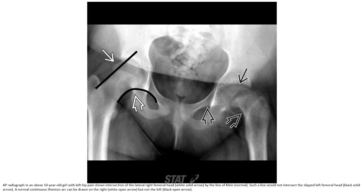This is the AP radiograph of a 10-year-old patient with left hip pain. On the right side, the line of Klein — drawn along the lateral femoral neck — normally intersects the femoral head, which is normal here. On the left, the line of Klein would not intersect the slipped femoral head. A normal continuous arc can be drawn on the right but not the left.